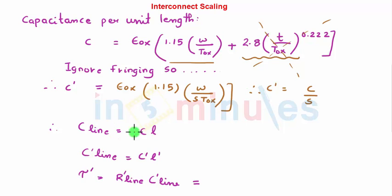What is Cline now? CL. So C'line is C' × L'. We know that C' is nothing but C/S and L' is nothing but L/S which is nothing but Cline/S². So this tells me that my Cline gets reduced by a factor of S².